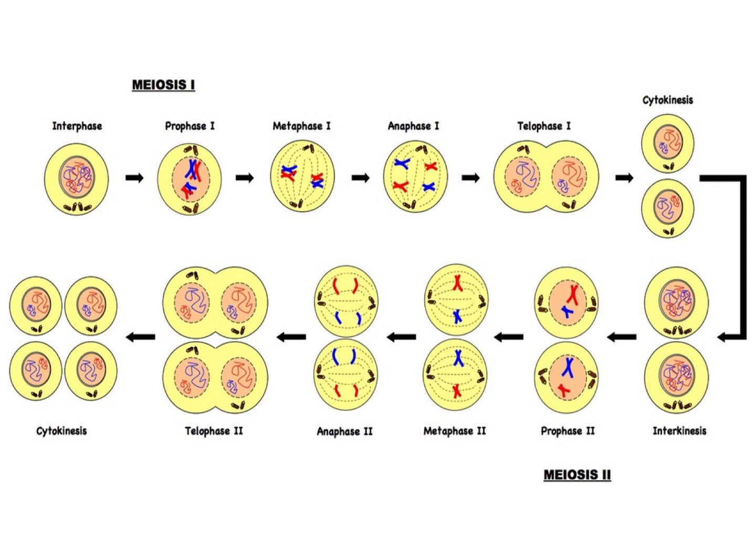Looking at the phases in detail: meiosis one — the cell makes a copy of its DNA during interphase; crossing over occurs during prophase one; then metaphase (middle), anaphase (apart), telophase — two new nuclei — and cytokinesis. Then we go right into meiosis two: prophase two — nucleus dissolves, chromosomes become visible; metaphase two — line up in the middle; anaphase two — chromosomes pulled apart; telophase two — cells divide.